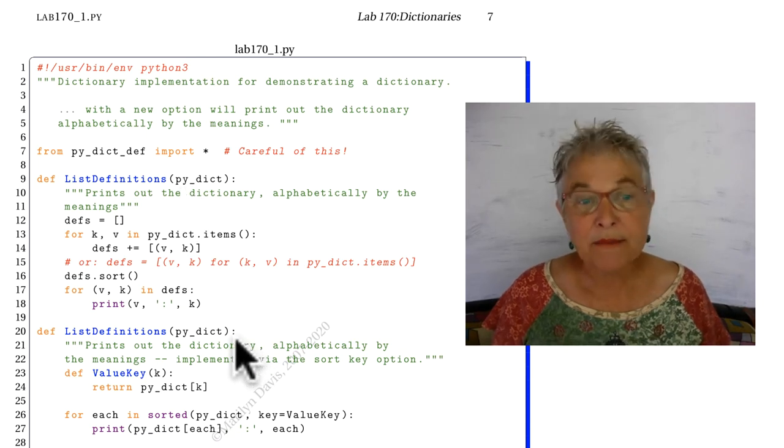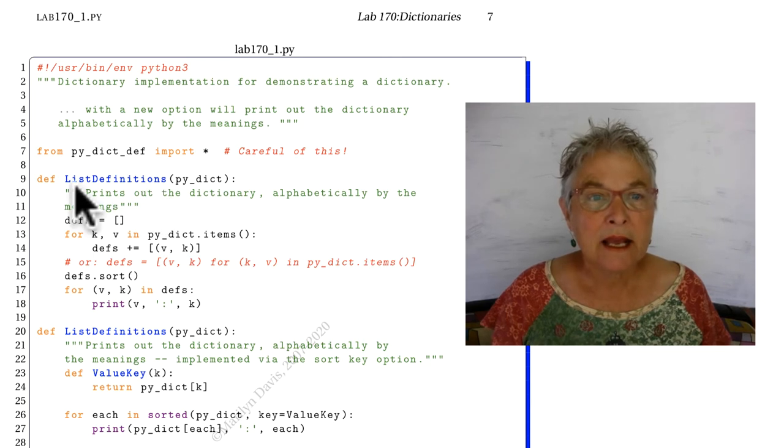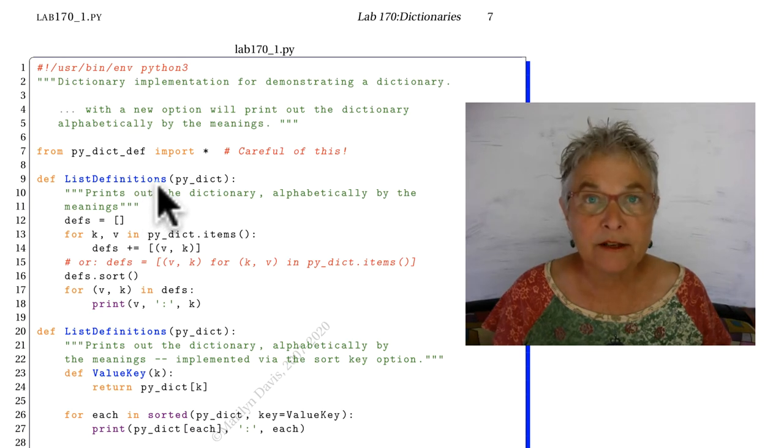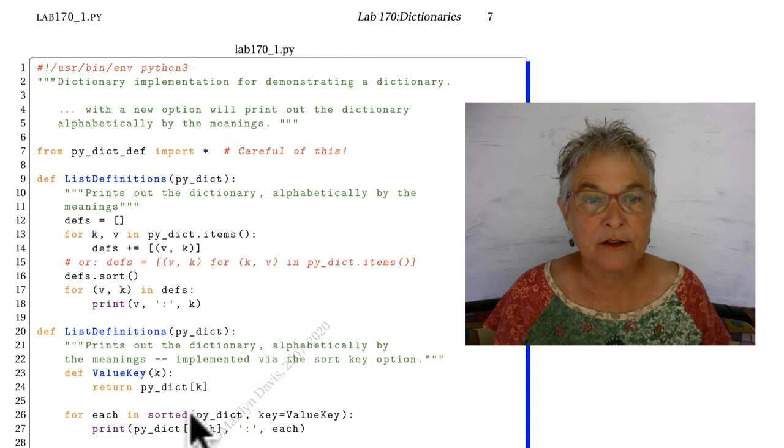But by now maybe that doesn't bother you too much because you realize that this list definitions was collected by the interpreter and the identifier put on, and then this one was collected by the interpreter and the identifier was moved to it.